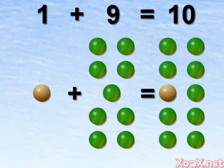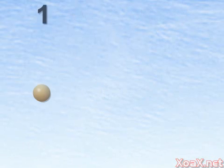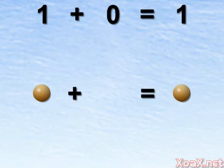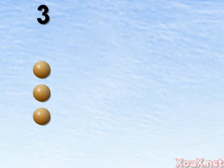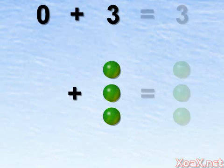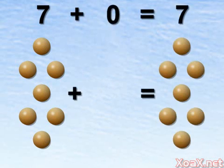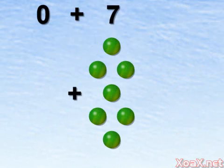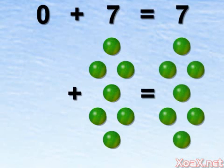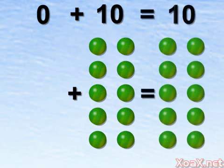1 plus 9 equals 10. 0 plus 1 equals 1. 1 plus 0 equals 1. 3 plus 0 equals 3. 0 plus 3 equals 3. 7 plus 0 equals 7. 0 plus 7 equals 7. 10 plus 0 equals 10. 0 plus 10 equals 10.